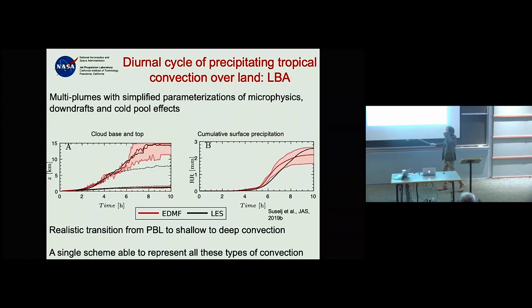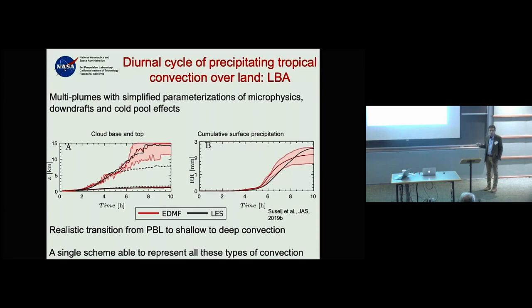The LES is shown in black and EDMF in red. You can see that the EDMF multiple-plume approach — combined with eddy diffusivity — is able to represent this transition. This is, I believe, the first time a single parameterization represents all these different types of convection.